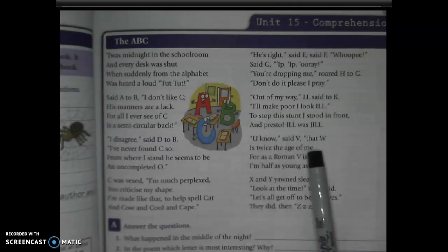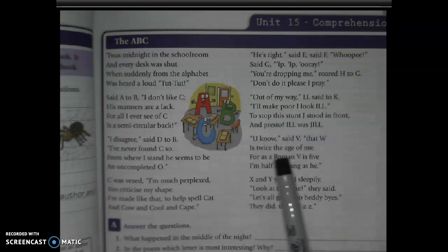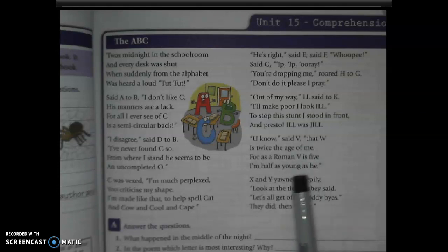'You know,' said V, 'that W is twice the age of me. For as a Roman V is five, I'm half as young as he.'